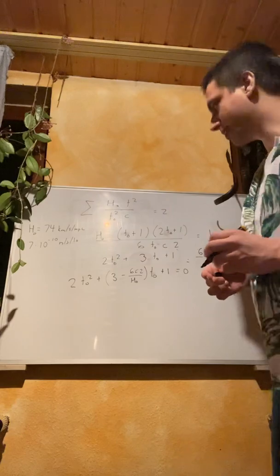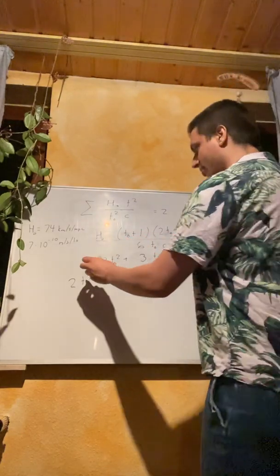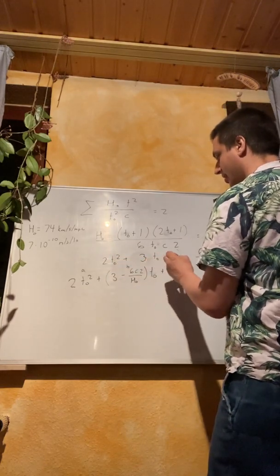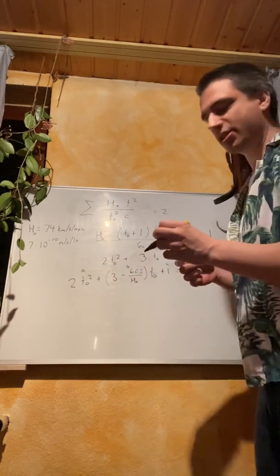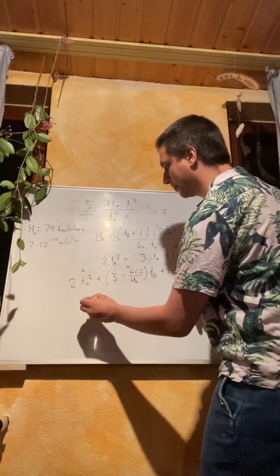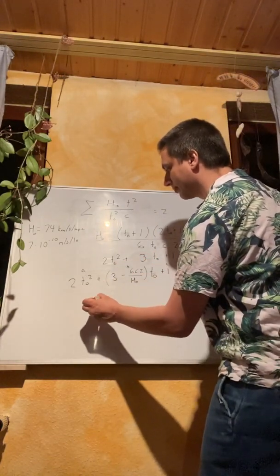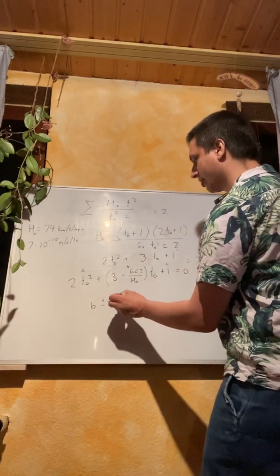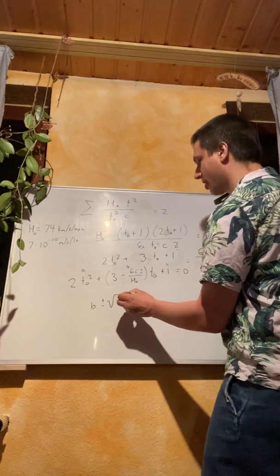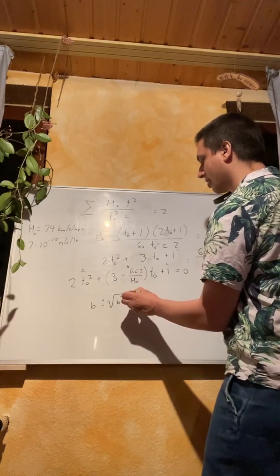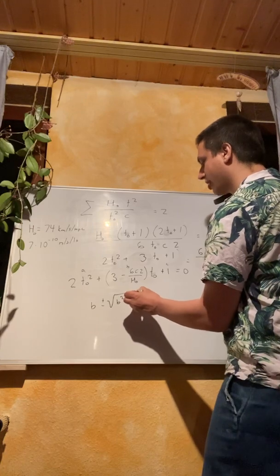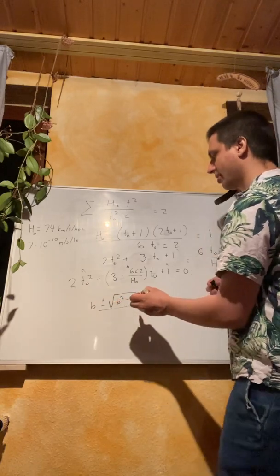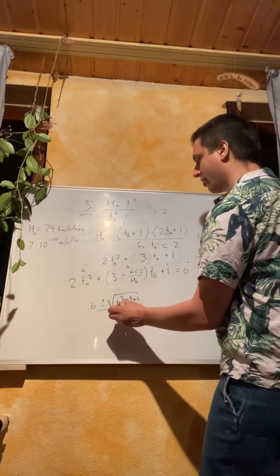So this would be from the formula a, b, and c. So quadratic formula is B plus minus square root of B to the square minus four A C divided by two A.